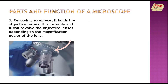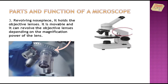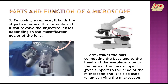Revolving nose piece holds the objective lenses. It is movable and it can revolve the objective lenses depending on the magnification power of the lens. Arm — this is the part connecting the base to the head and the eyepiece tube to the base of the microscope. It gives support to the head of the microscope and it is also used when carrying the microscope.